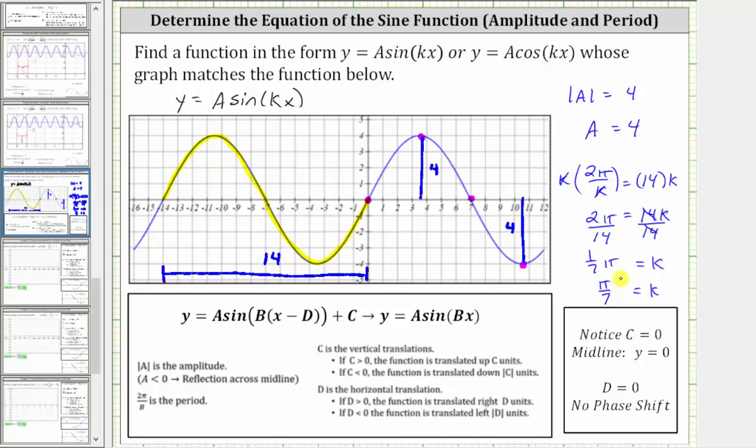Therefore, the equation of the graph in terms of sine is y equals 4 sine pi over 7 x. I hope you found this helpful.